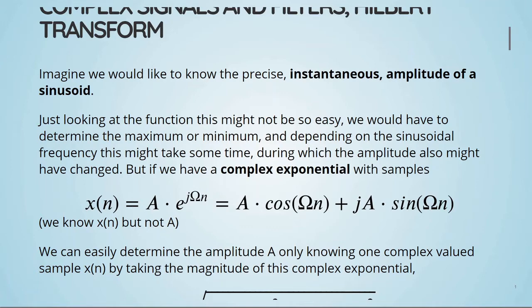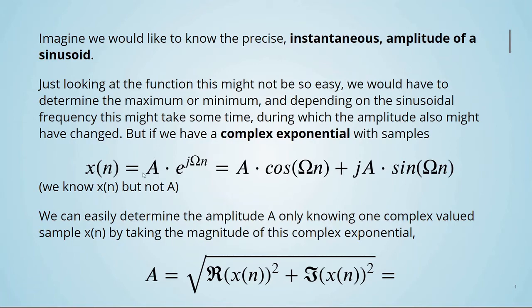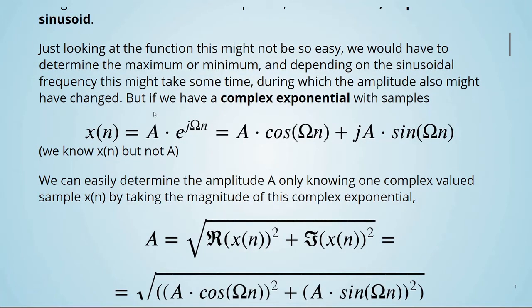But if we have a complex exponential with samples given by x(n) equals A times e to the power of jΩn, we can use trigonometry and exponential substitution, and we find that this is equivalent to A times cosine of Ωn, plus jA times sine of Ωn. In this case we know x(n), but we don't know A, and we like to know A. This is the amplitude, so we can easily determine the amplitude A.